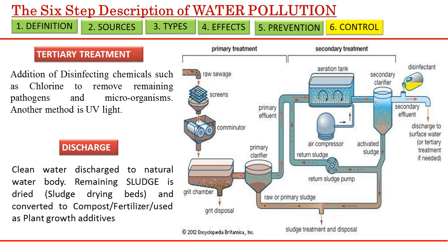Following primary and secondary treatment, there is tertiary treatment, sometimes referred to as the polishing step. Disinfectants such as chlorine are added to the treated wastewater to eliminate pathogenic microorganisms. After this step, the wastewater is tested for compliance with local regulatory body water quality standards before being discharged into a natural water body. The sludge left over from all these processes is concentrated in nutrients and can be used as a plant growth additive after proper drying and processing.